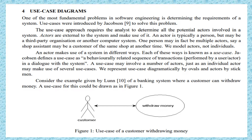An actor makes use of a system in different ways, and this is known as a use case. As defined by Jacobson, the author of use case, it is a behaviorally related sequence of transactions performed by an actor in a dialogue with the system. We represent use cases by ovals and actors by stickmen.